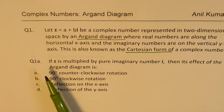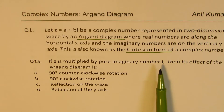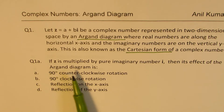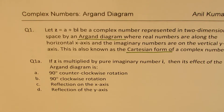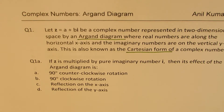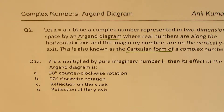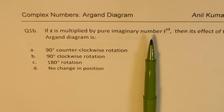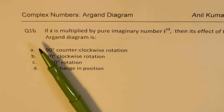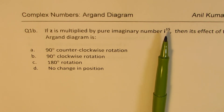Question 1a: if z is multiplied by pure imaginary number i, then its effect on the Argand diagram is what? Is it 90 degrees counterclockwise rotation, 90 degrees clockwise rotation, reflection on the x-axis, or reflection on the y-axis? That is your first question. You can pause the video, answer this question, and then look into my suggestions. Let me first discuss all four questions with you. Question 1b: if z is multiplied by pure imaginary number i to the power of 15 — so in 1a we multiplied by just i, now by some power — in this case the power is 15.